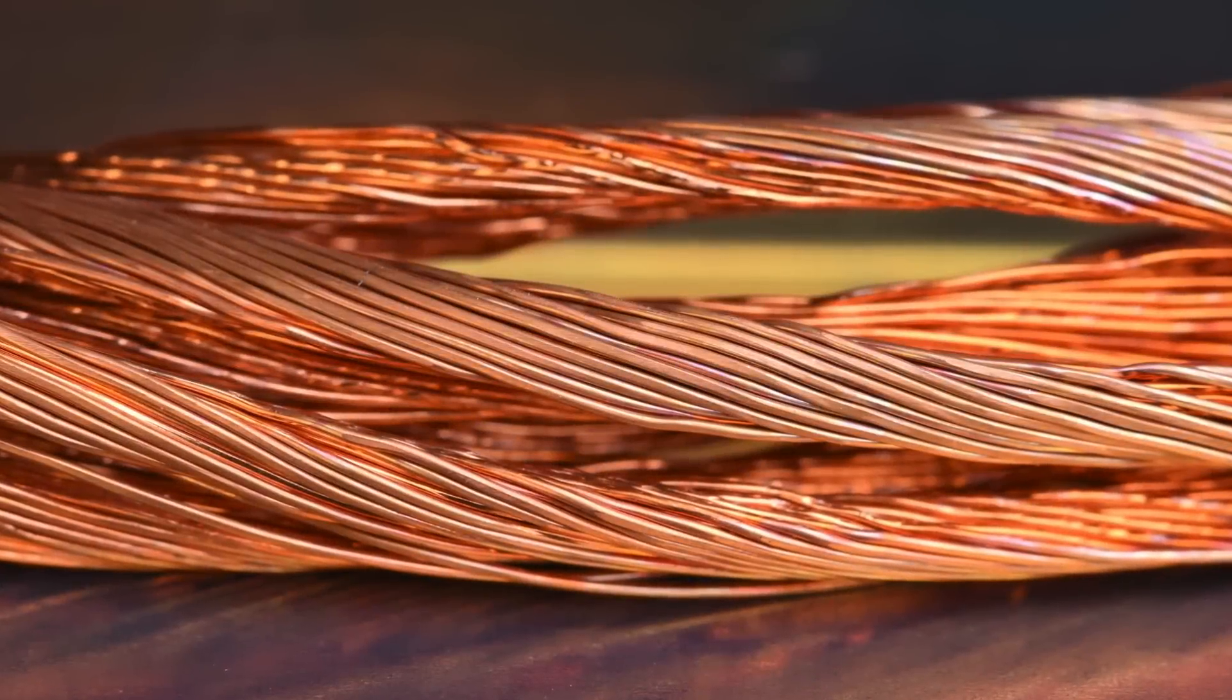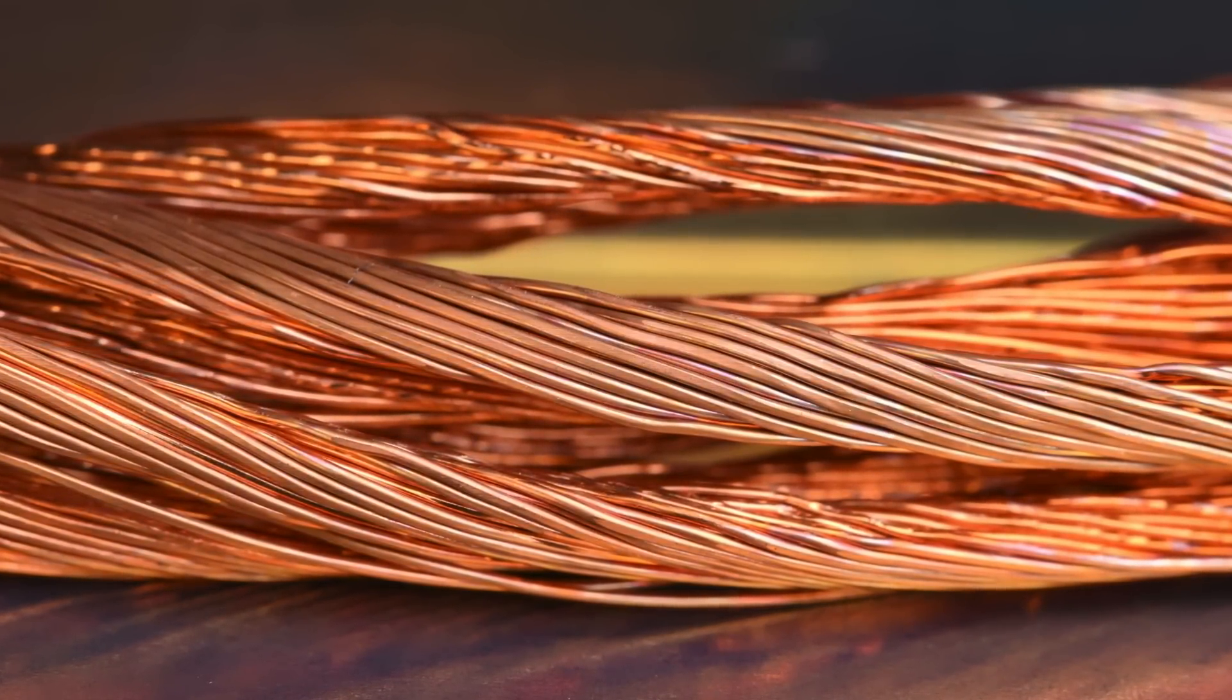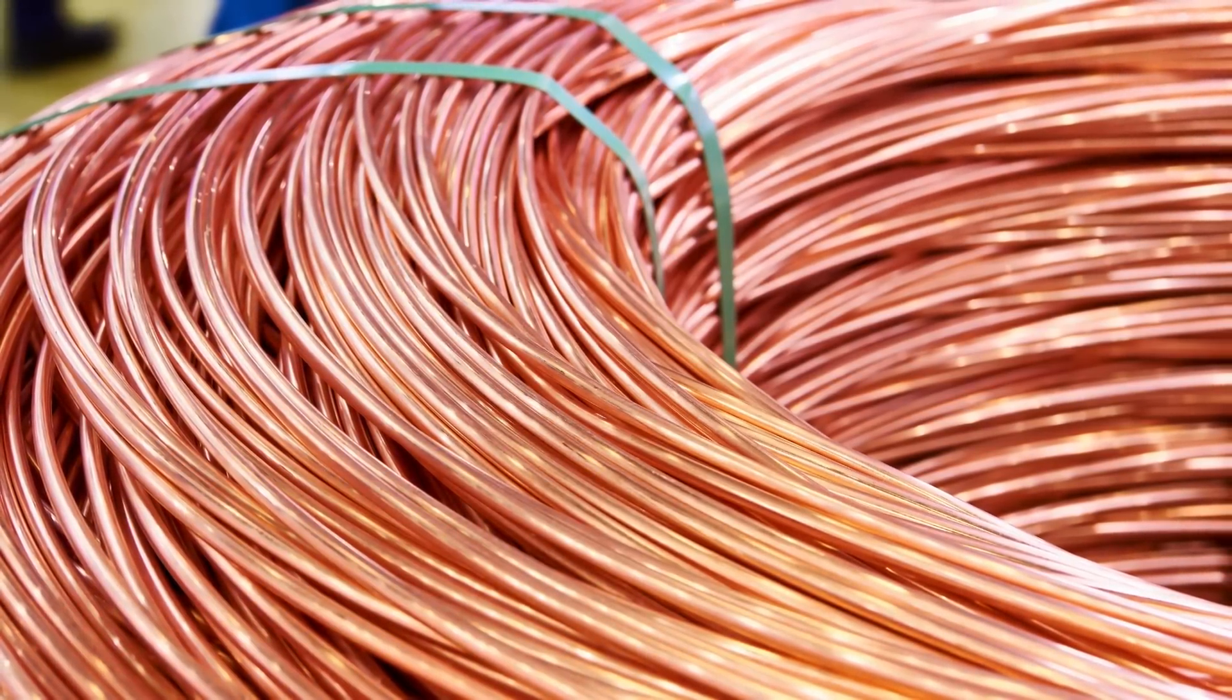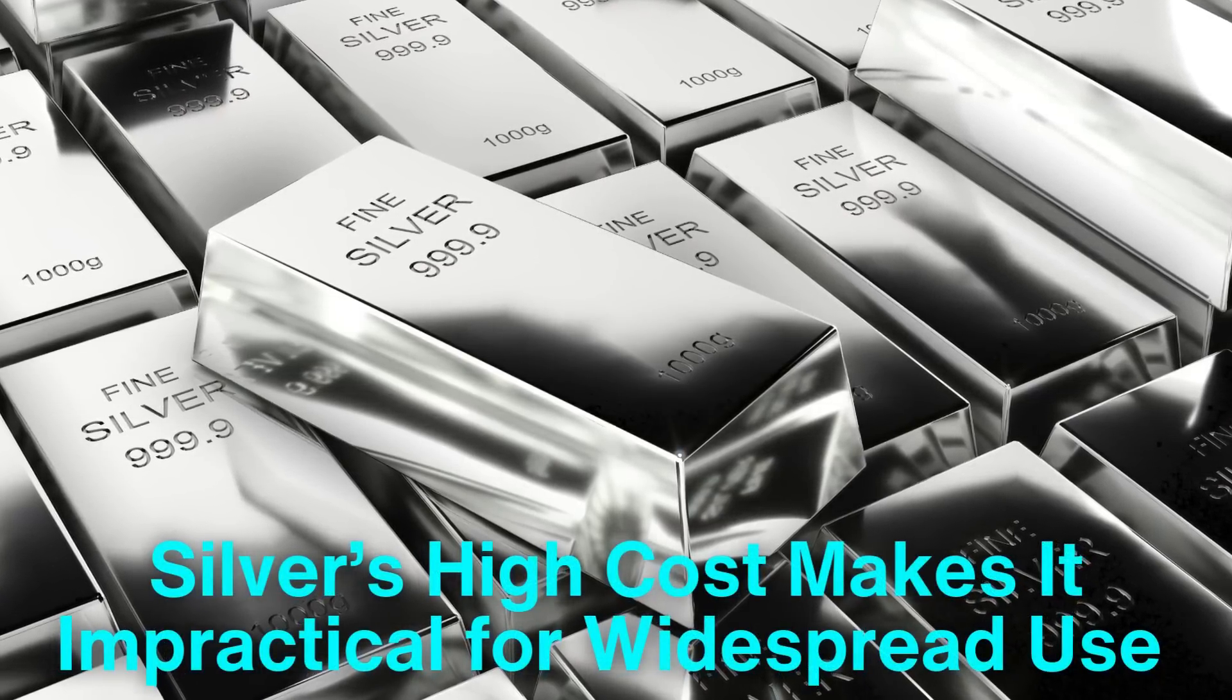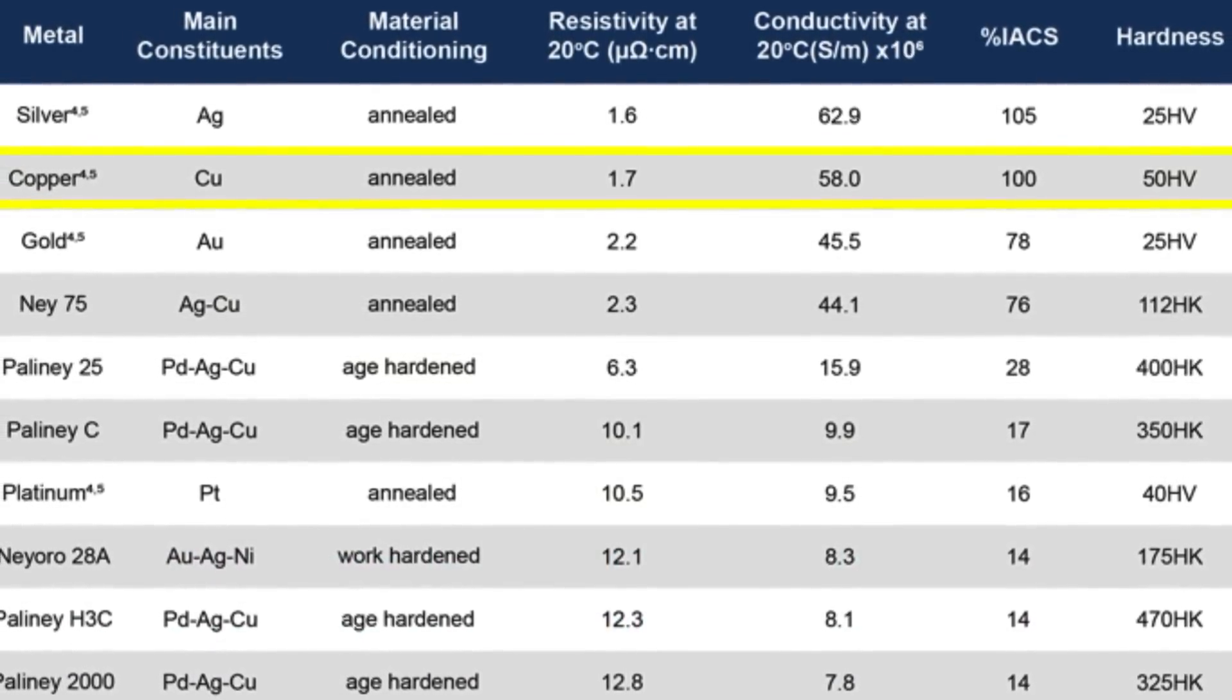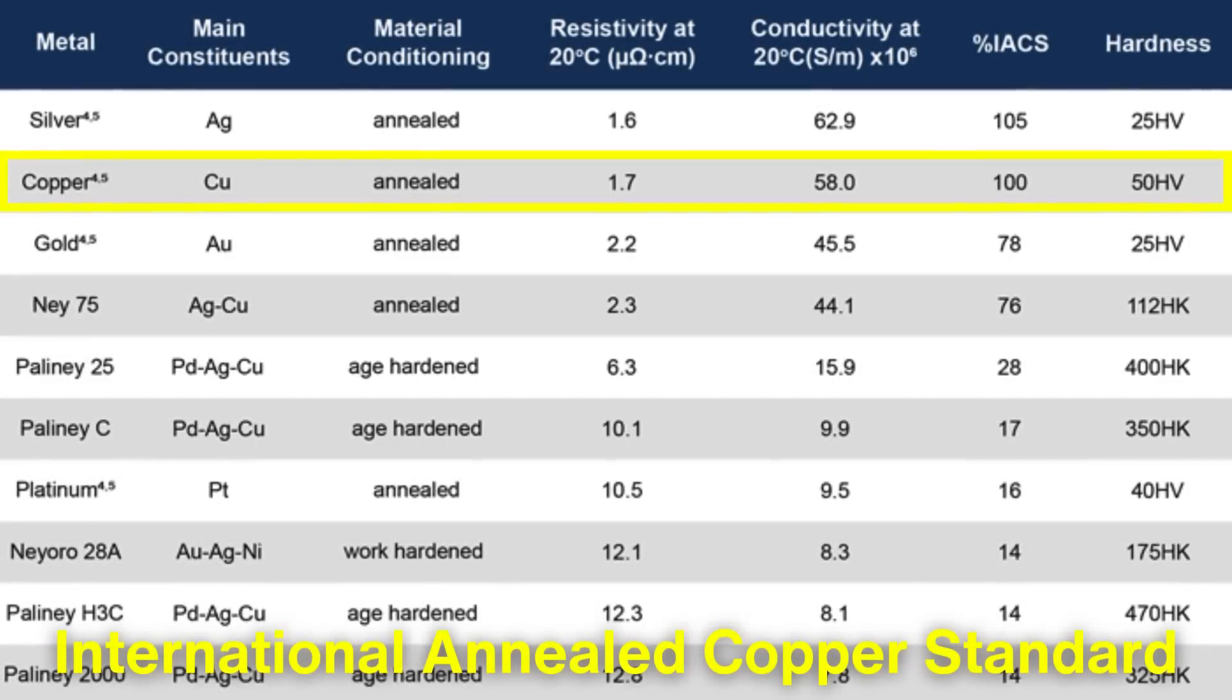At the heart of copper's suitability for wiring is its exceptional electrical conductivity. Copper is second only to silver in terms of how well it conducts electricity, but silver's high cost makes it impractical for widespread use. Copper's electrical conductivity is rated at nearly 100% on the international annealed copper standard, making it the benchmark against which all other conductors are measured.